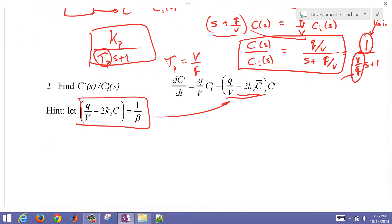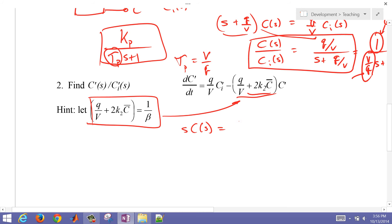So if I put this into Laplace form, again, zero initial condition, so I'm just going to leave that out. And then I have Q divided by V times Ci of S, and then minus 1 over beta times C of S.